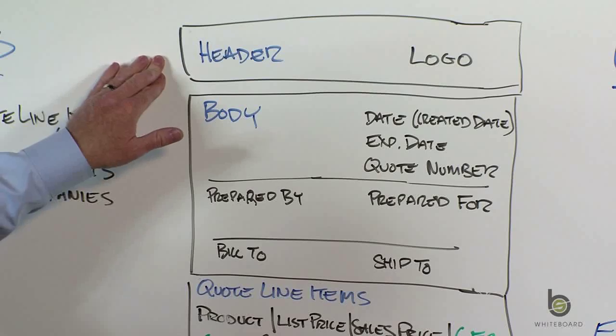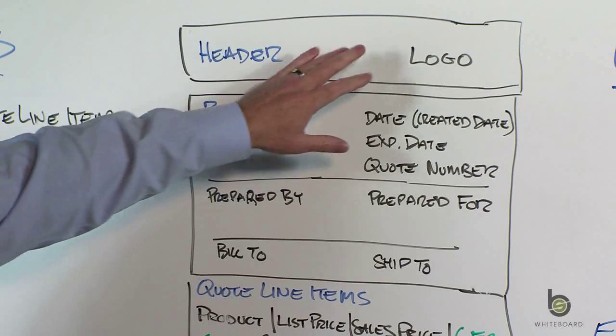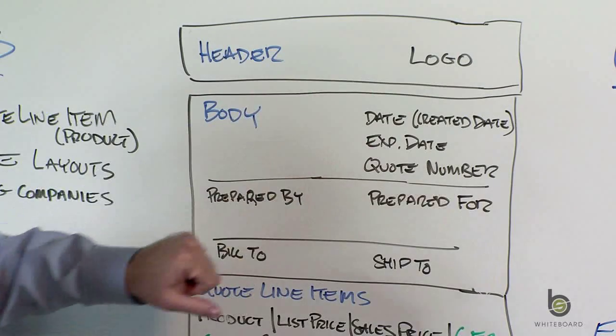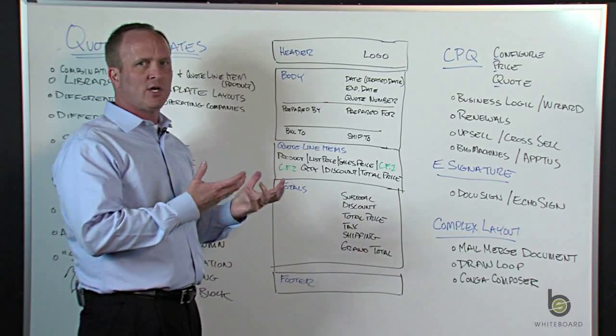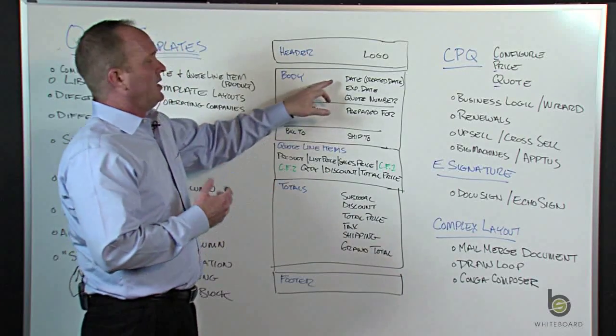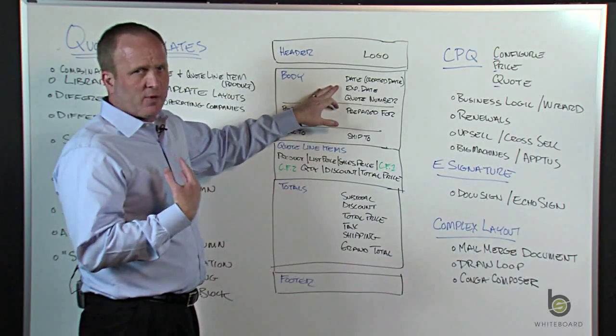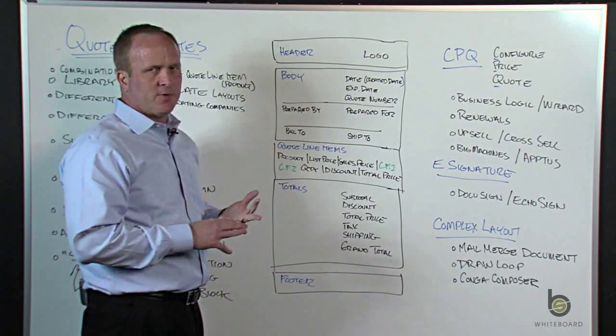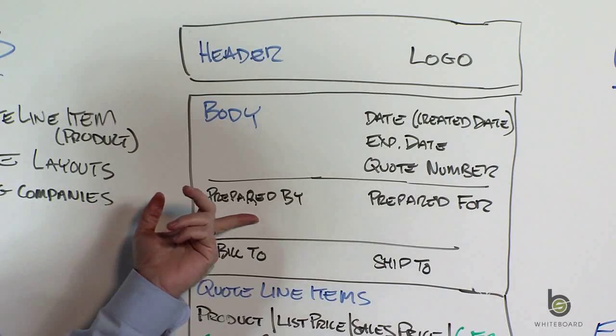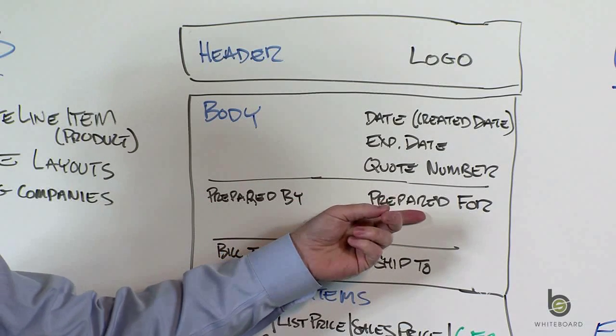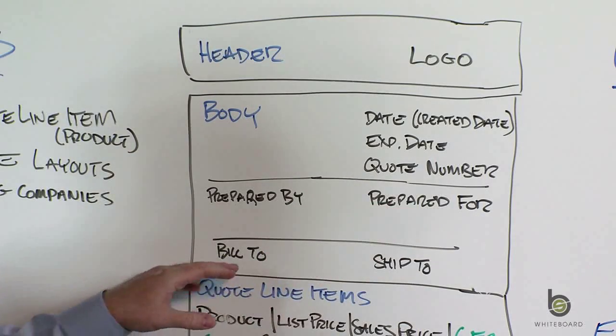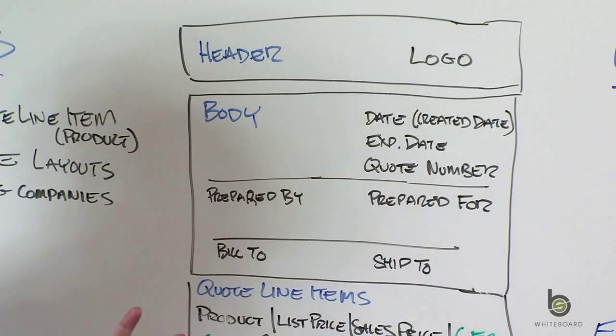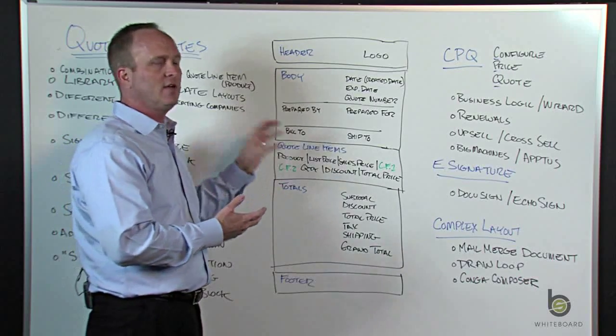The header, people usually put the logo up at the top as a field. You can actually put an image into that header section. The body is pulling the fields that really come from the quote itself. So the fields that we talked about in our previous segment: the created date, expiration date, quote number. Prepared by is the salesperson's information. Prepared for would be the contact that we associated to the quote in a previous segment. And then bill to and ship to are pulling the address fields that are related to the account that this quote is going to.